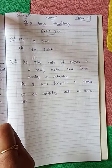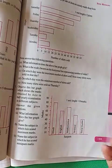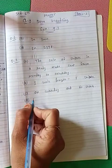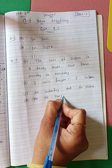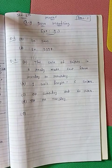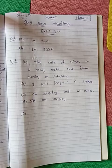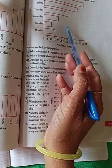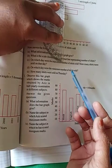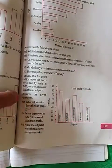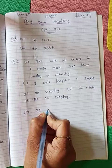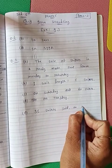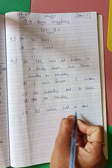Part D: on which day were the minimum number of shirts sold? Look at which bar has the smallest height — it is Tuesday. So write: on Tuesday, minimum number of shirts were sold. Part E: how many shirts were sold on Thursday? Using the scale you can check — 35 shirts were sold on Thursday. Write: 35 shirts sold on Thursday.